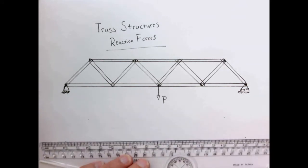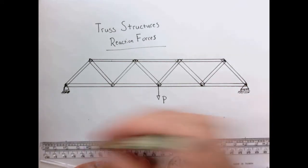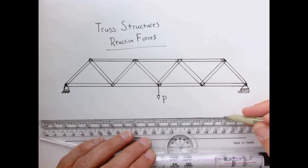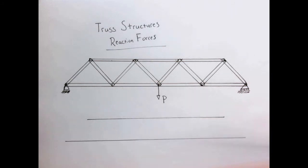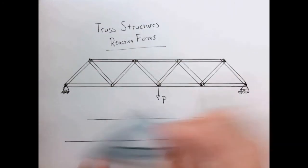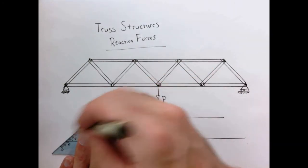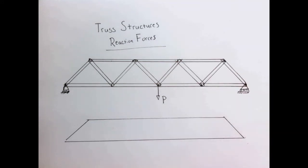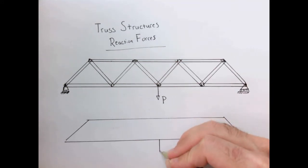So let's draw a free body diagram. I won't draw the full truss structure because actually for the reaction force, what the internal structure of this thing is doesn't really matter. So let me just draw an approximation here.